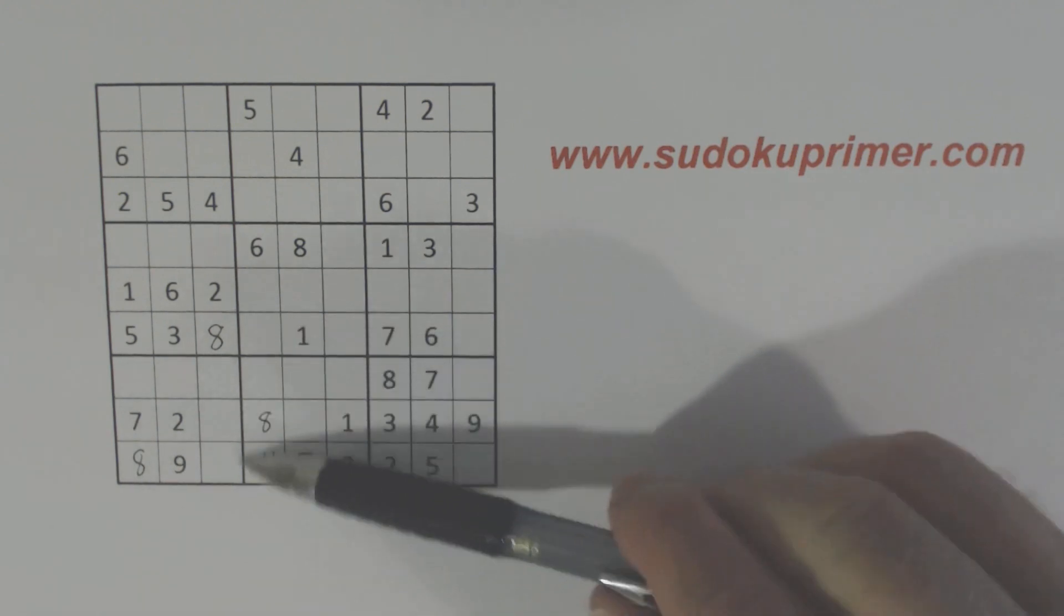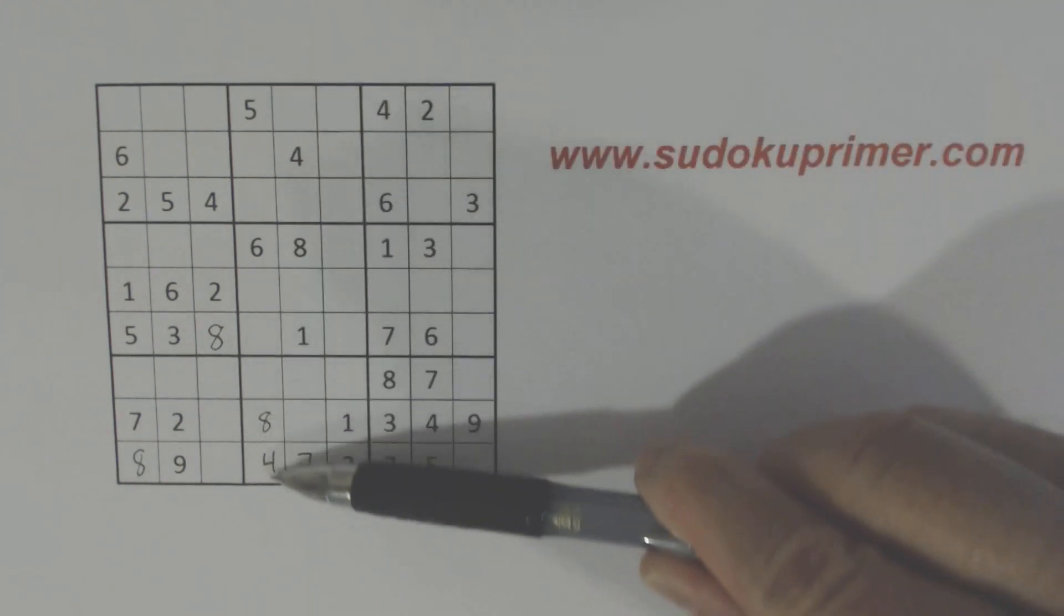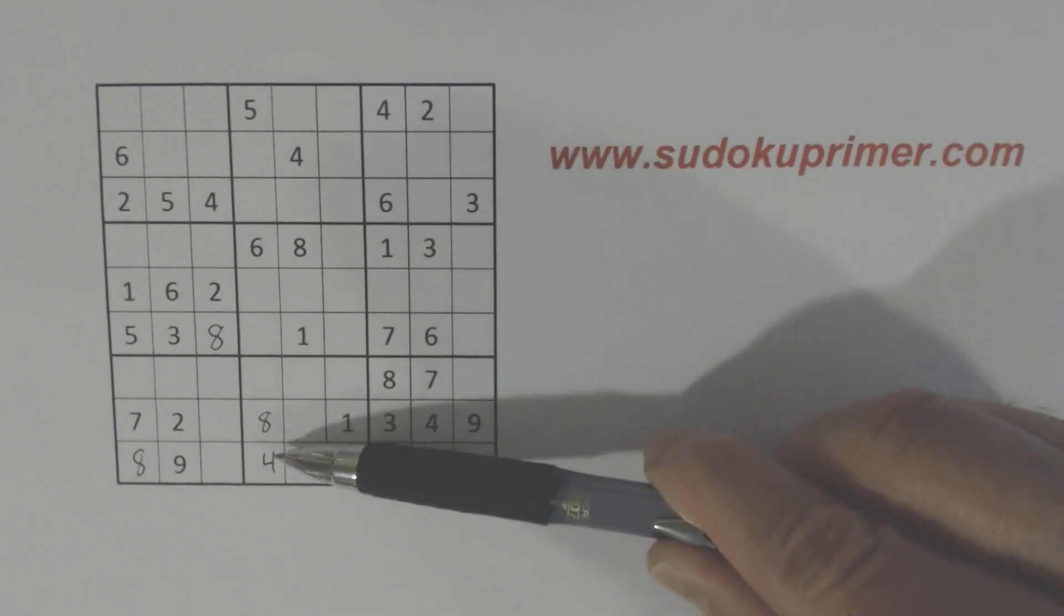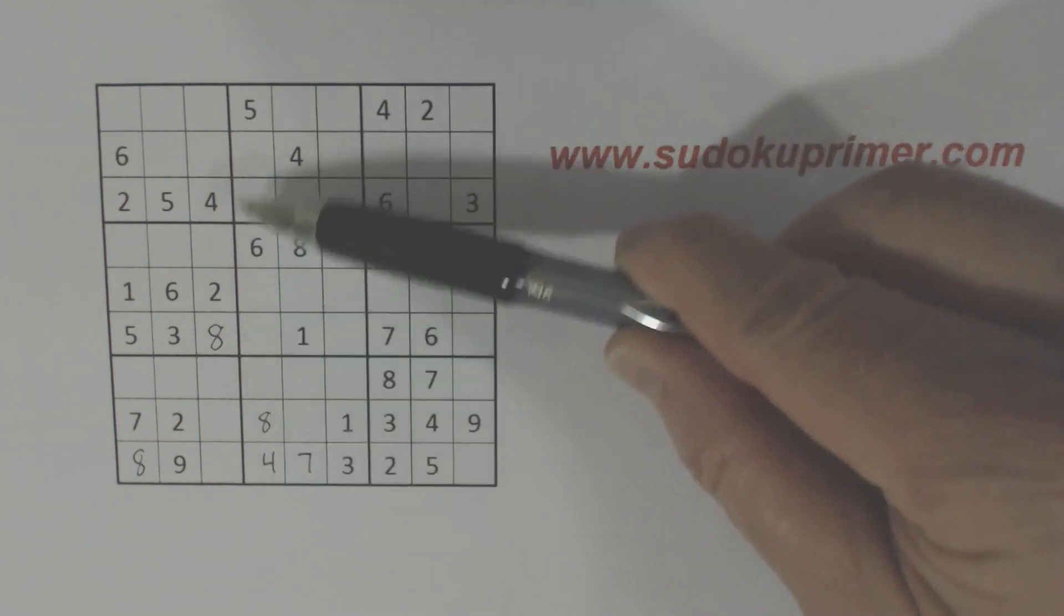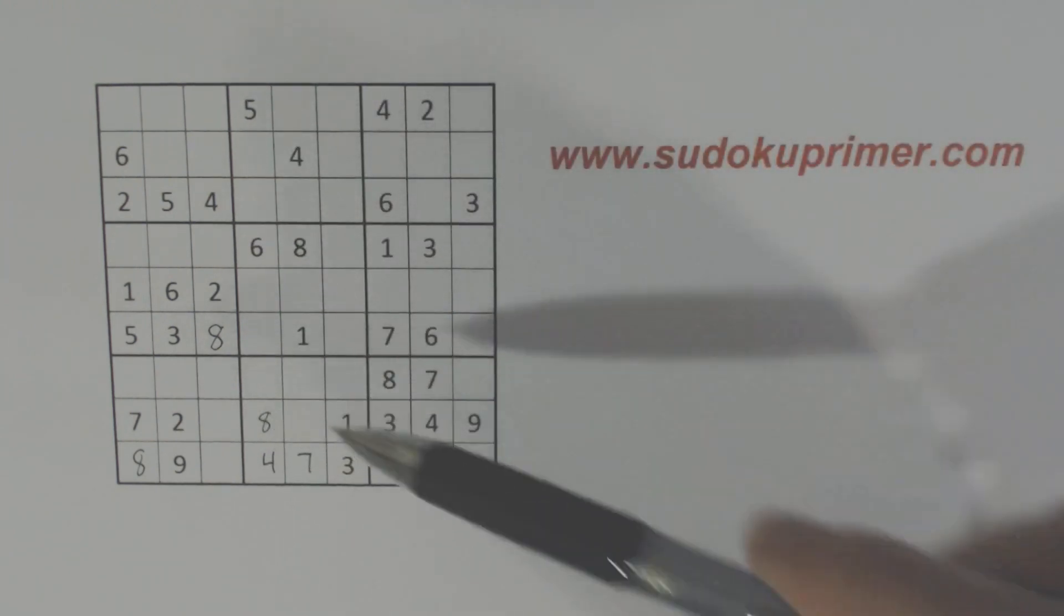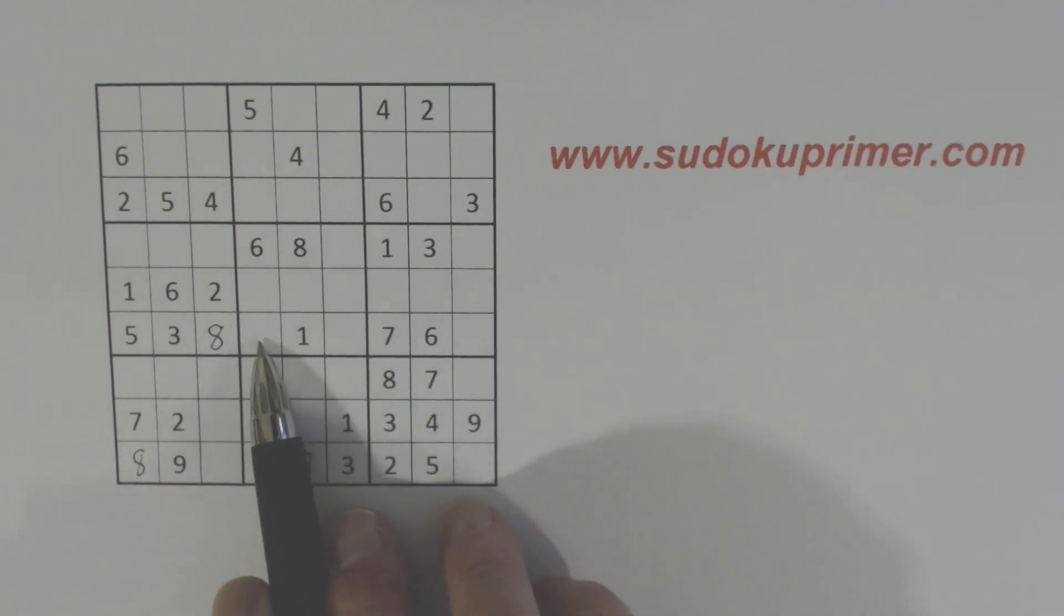And now I'd like to point out right here in this, what are we missing? 1, 2, 3, 4, 5, 6, 7, 9. Here's a 1, 3, and a 7. So that's a 2 or a 9. And here's a 1, 3, or 7. So that's a 2 or a 9. So we have 2-9 twins right here that we can't solve yet. But I just want to point those out.